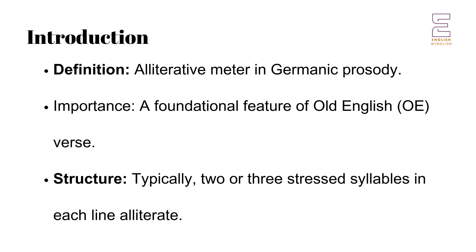Introduction. Alliterative verse is a distinctive feature of Germanic prosody, playing a foundational role in the poetry of early English literature. Characterized by the repetition of consonant sounds at the beginning of words, alliterative meter became a crucial element of Old English verse. This video explores the evolution of alliterative verse from its origins in Old English through its transformations in Middle English, its decline in the Tudor period, its revival in the 19th century, and its continued presence in modern poetry.